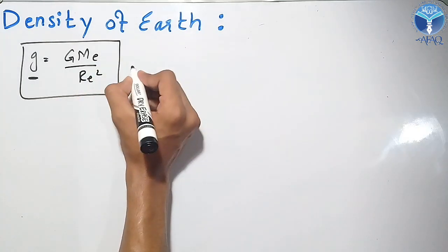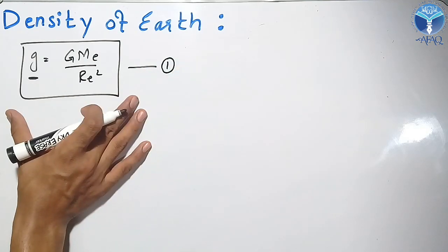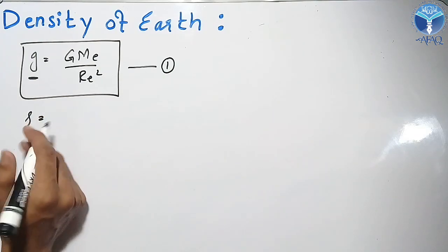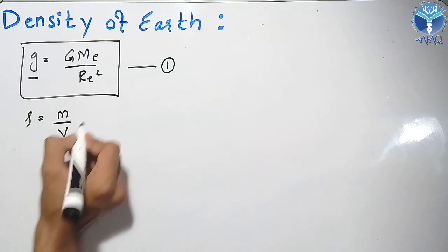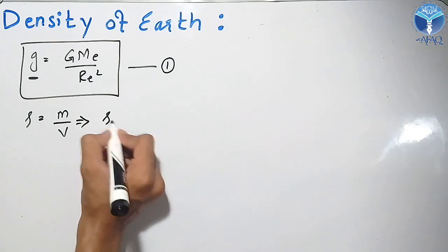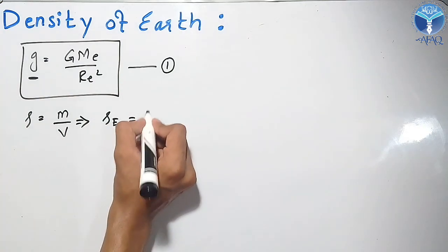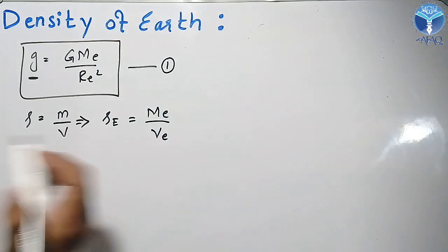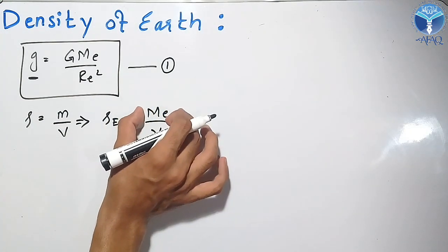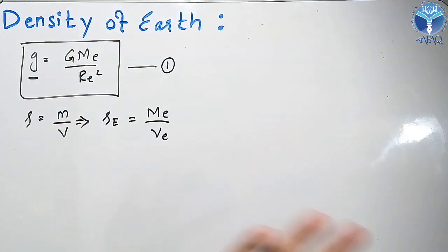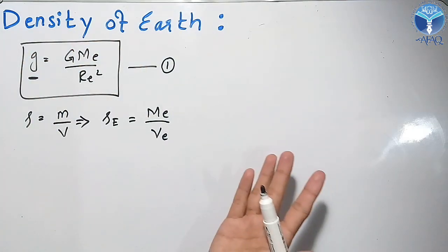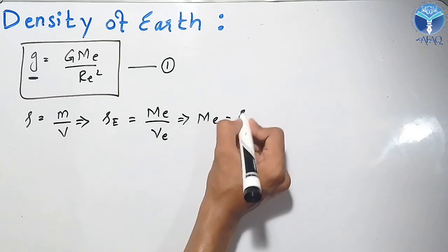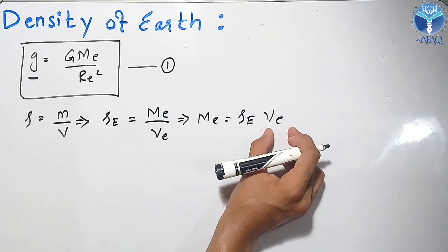So I want to find the density of the Earth. I will write ρₑ = Mₑ/Vₑ, which is mass of Earth divided by volume of Earth. Using this equation, I will substitute the mass of Earth and the density will be derived. Mass of Earth will be equal to ρₑ × Vₑ, where ρₑ is the density of Earth and Vₑ is the volume of Earth.